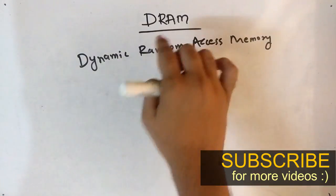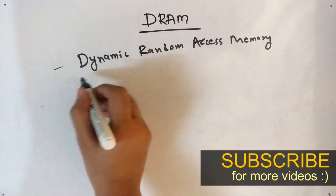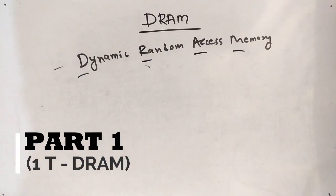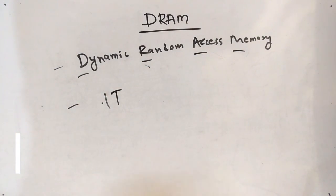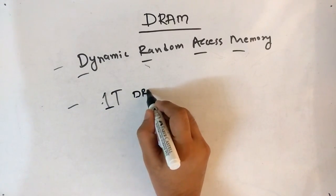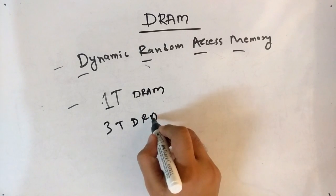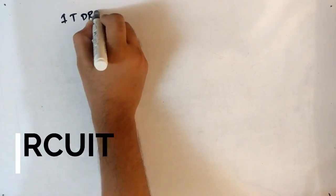Hello friends, today our topic is DRAM — Dynamic Random Access Memory. First we will see the working of one-transistor DRAM, then we will see three-transistor DRAM. So let's start with the first point: the one-transistor DRAM.